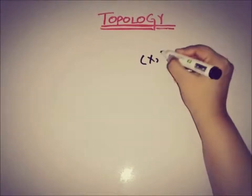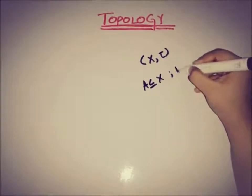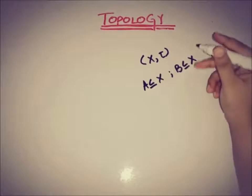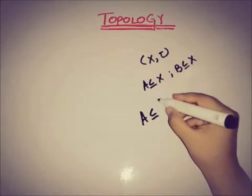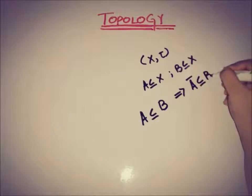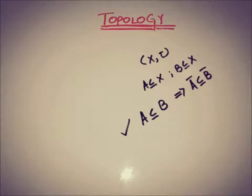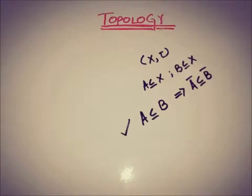If (X, τ) is a topological space and A is any subset of X and B is also a subset of X, the theorem states that if A is a subset of B, then this implies that the closure of A is also a subset of the closure of B.